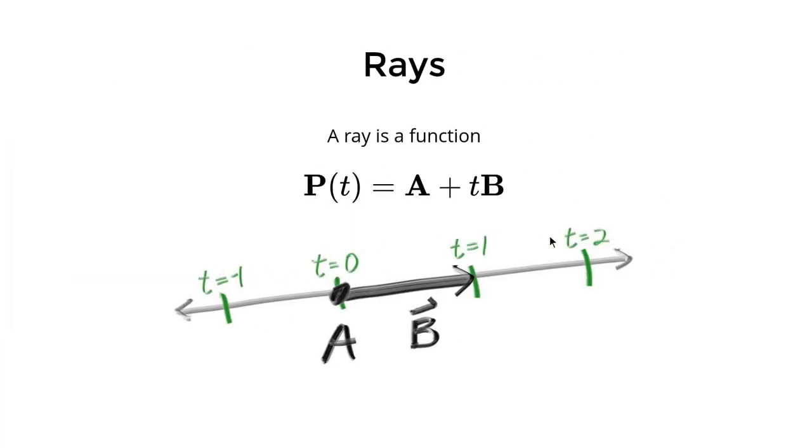With the vector representation, a ray is just an origin and a direction. We can represent a ray as a function: P(t) = A + tB, the linear interpolation of the origin and the direction vector. Notice here, origin is a point and direction is a vector, but in our math notation, we do not distinguish those two, just like in our code.